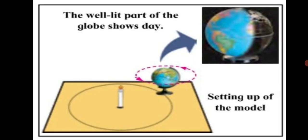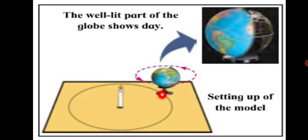Try this: stand a candle in the middle of a large table and draw a big circle around it. Place a globe at any point on this circle, then light the candle. You should do this activity when it is completely dark. Suppose the candle is the sun. Now, looking at the globe from the direction of the North Pole, turn it anticlockwise. You can see the direction of the arrows — anticlockwise. This is how the Earth rotates.